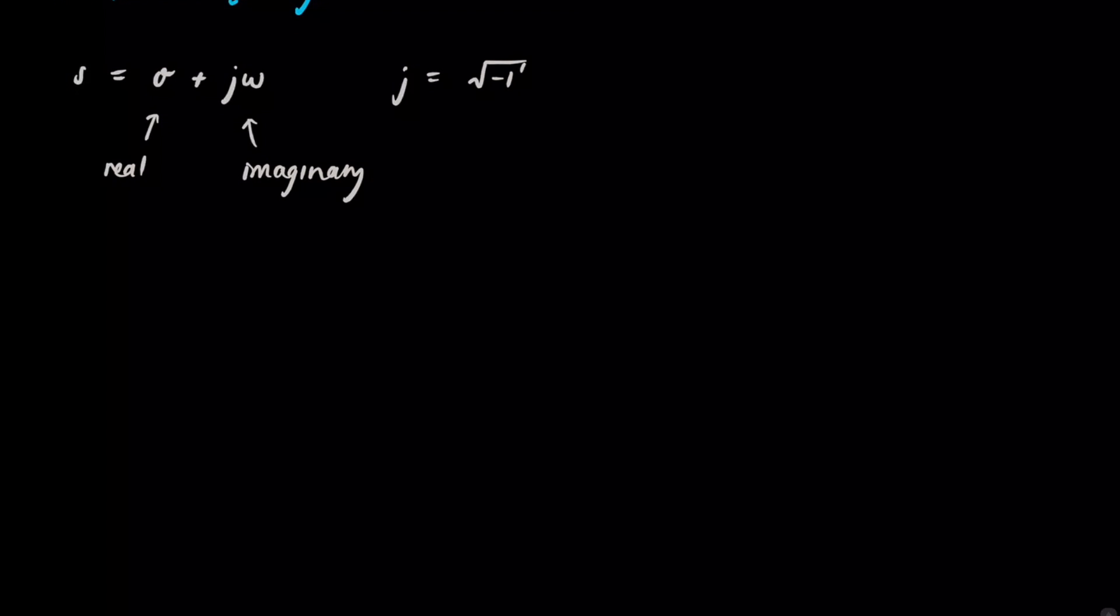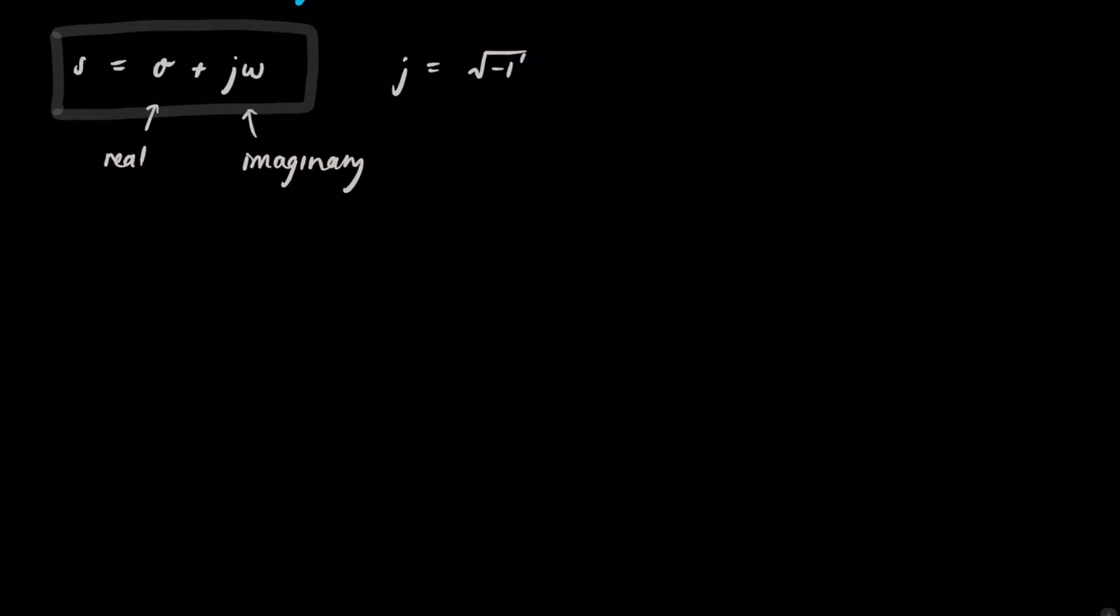The good thing about complex frequency and the reason that it's used is that you can model pretty much any sinusoid with it. So as an example, let's just see how that's possible. If you just look at e to the ST, well we know that equals, we said that S was sigma plus j omega, so it's actually e to the sigma plus j omega times t.